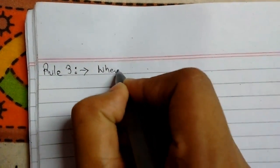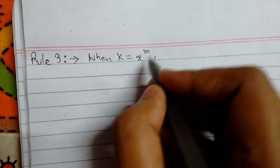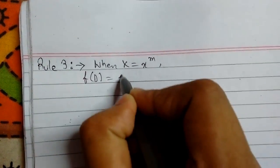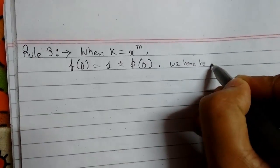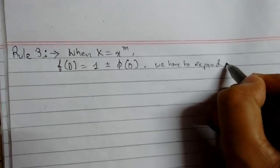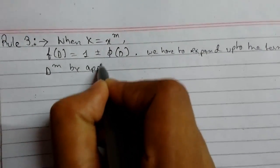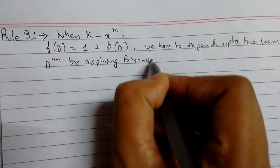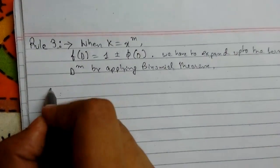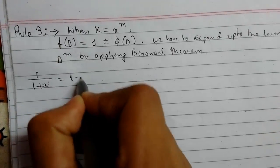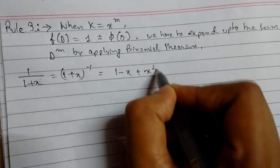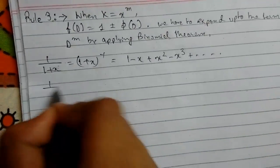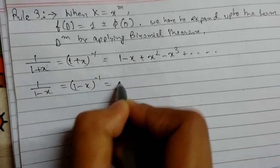Rule number three is: when x equals x to the power m, then we can write f of D as one plus or minus phi of D. We have to expand up to the term D to the power m by applying the binomial theorem. For one plus x to the power minus one, this equals one minus x plus x squared and so on. For one minus x to the power minus one, all the terms will be positive.